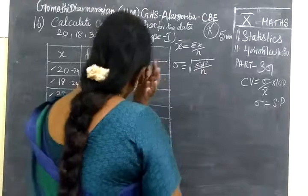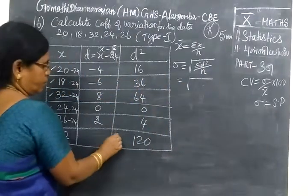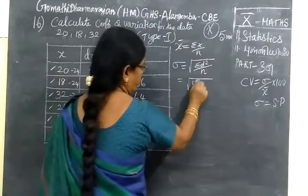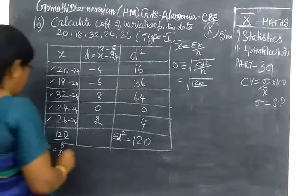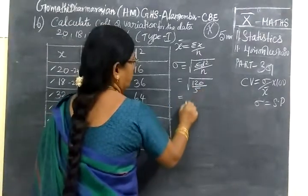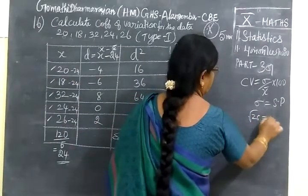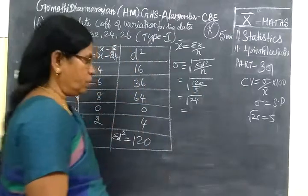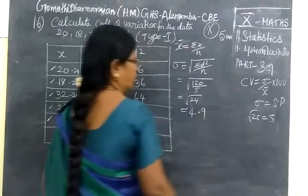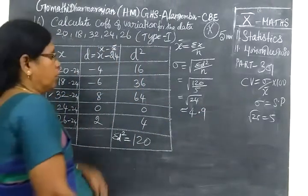So you substitute here. Root of, this is sigma d square. Sigma d square equal to 120. So 120 by number of terms. Number of terms 5. d square root of 24. Root of 24, 25. Root of 24. Therefore, this is approximately 4.9. Calculation in a 4.9.